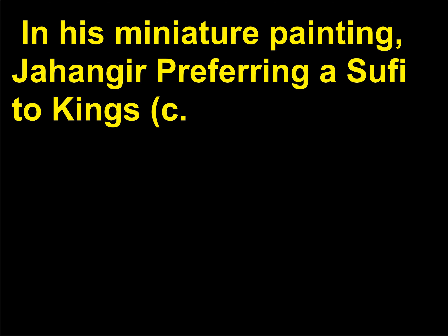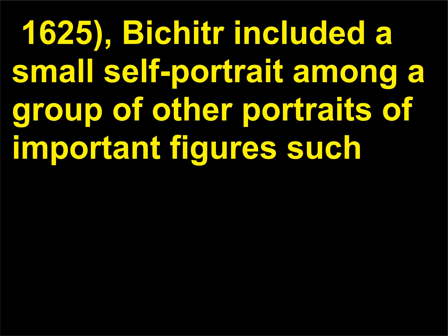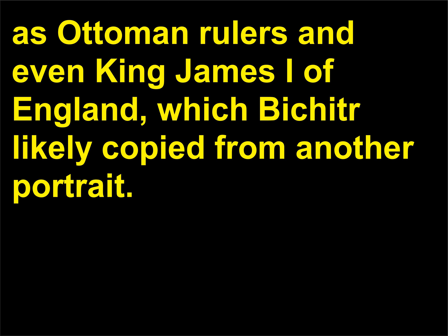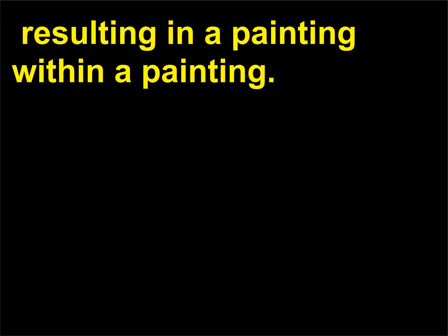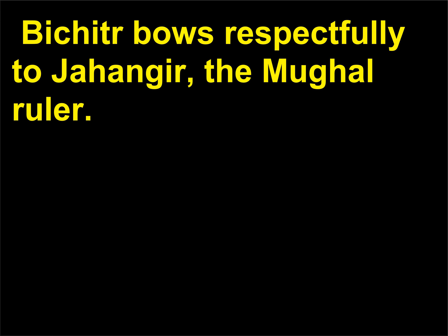In his miniature painting Jahangir Preferring a Sufi Shaikh to Kings (c. 1625), Bichitra included a small self-portrait among a group of other portraits of important figures such as Ottoman rulers and even King James I of England, which Bichitra likely copied from another portrait. The self-portrait shows the artist holding a small painting of himself, resulting in a painting within a painting. Bichitra bows respectfully to Jahangir, the Mughal ruler.